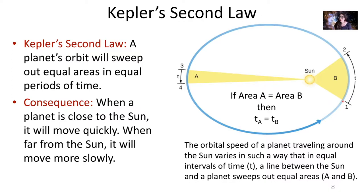Our planet is going to move from position one to two in some period of time T. As it does that, a line connected between the sun and the planet will move through this area shaded in yellow that we are calling area B. So that area B is swept out as we move from position one to two in time T.